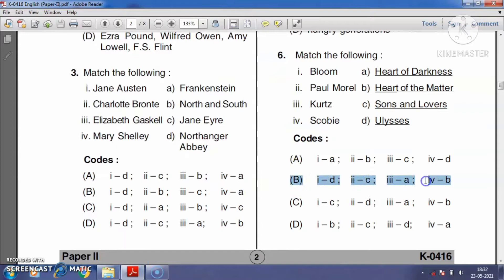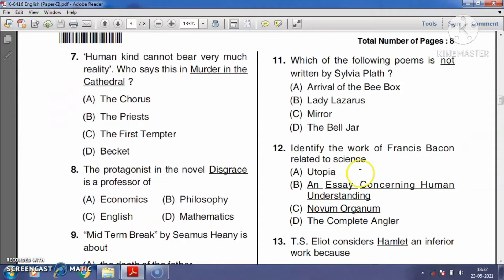Question number seven: 'Humankind cannot bear very much reality.' Who says this in Murder in the Cathedral? The chorus, the priest, the first tempter, or Becket? Murder in the Cathedral is the verse drama by T.S. Eliot that portrays the assassination of Archbishop Thomas Becket in Canterbury Cathedral during the reign of Henry II. These lines are told by Thomas Becket, so the right answer is option D, Becket.